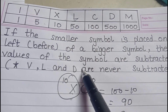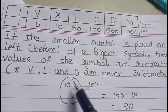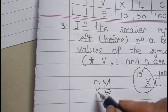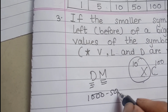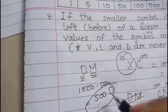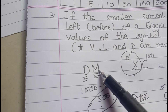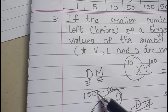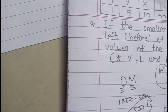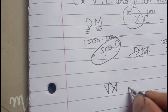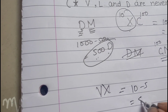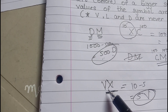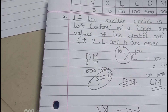There is also an exception for subtraction: V, L, and D are never subtracted. They are never subtracted because they are numbers with fives. For example, if you write DM, that would be 1000 minus 500 = 500, which is D — a symbol we already have. Similarly, XV would be 10 minus 5 = 5, which is V, a symbol we already have. So we never subtract V, L, or D.